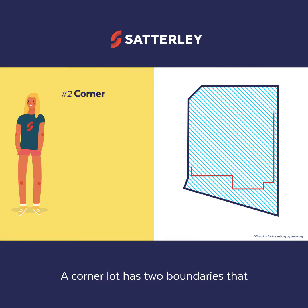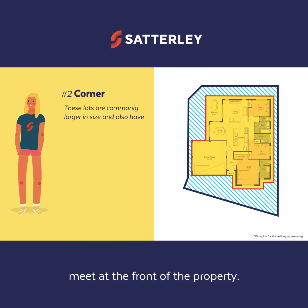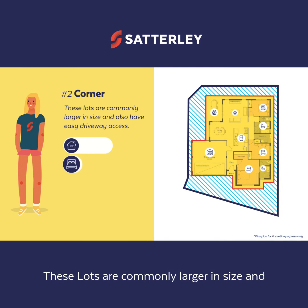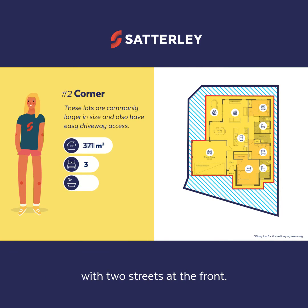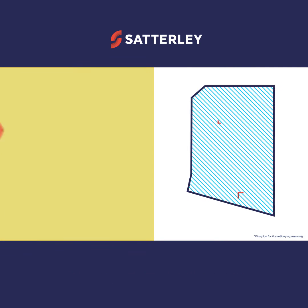A corner lot has two boundaries that meet at the front of the property. These lots are commonly larger in size and with two streets at the front, they also have easy driveway access.